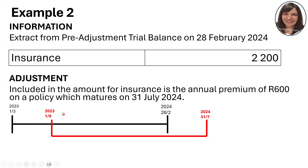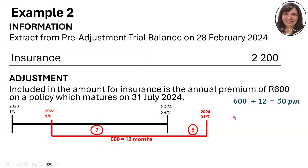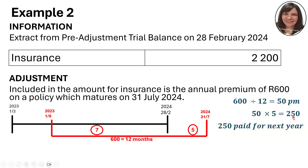The policy ends 31 July and it's an annual premium, so it started 1 August. Some of this insurance policy falls within my financial year — that's fine. But the part outside the financial year needs to be taken out. The 600 is for the full 12 months; seven months fall within the timeline but five months must be removed. 600 divided by 12 months is 50 rand per month. Five months too much: 50 times 5 equals 250 rand paid for next year.